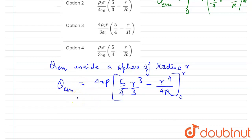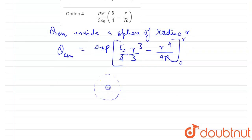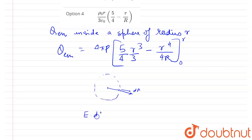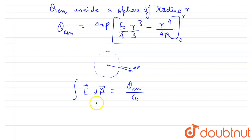To find the electric field at distance r, draw a Gaussian surface at radius r. At every point on this surface the electric field is perpendicular to the surface and directed radially outward. Applying Gauss's law: the surface integral of E · dA equals Q_enclosed / ε₀.